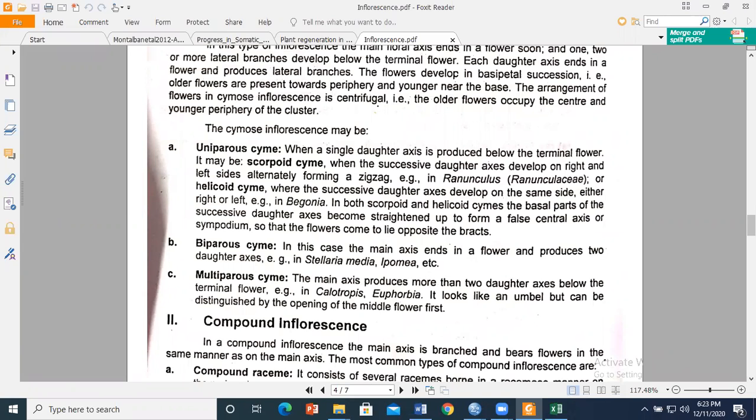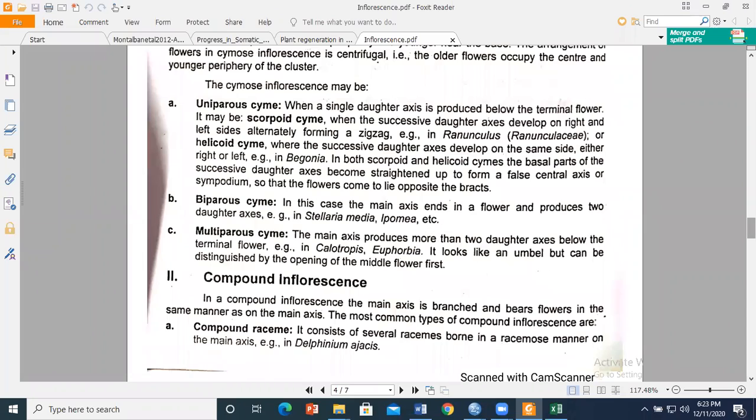In compound inflorescence, these are simple inflorescences arranged in groups to form compound inflorescence. The most common type of compound inflorescence is compound raceme, which consists of several racemes in the form of one inflorescence on the main axis.